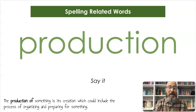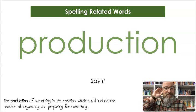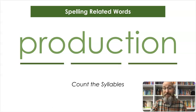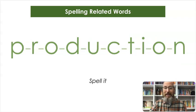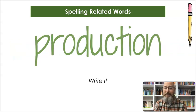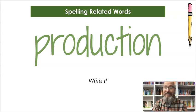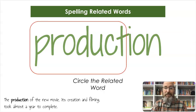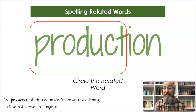The next word is production. The production of something is its creation, which could include the process of organizing and preparing for something. Count the syllables — production. Let's spell it: P-R-O-D-U-C-T-I-O-N, production. And let's write it: P-R-O-D-U-C-T-I-O-N. I'm going to circle product, which of course sounds different than production. The production of the new movie — its creation and filming — took almost a year to complete.